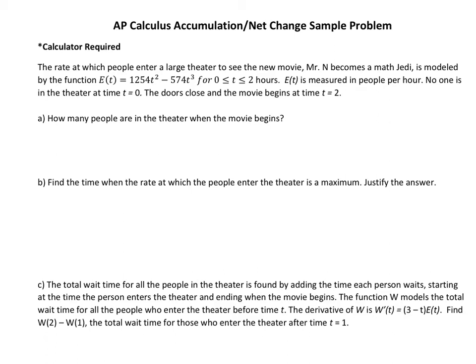Hey everybody, it's Mr. N here, and today we are going to do a practice problem for the AP test. This is an accumulation net change problem that resembles one that was on the AP test. The rate at which people enter a large theater to see the new movie, Mr. N Becomes a Math Jedi, is modeled by the function E(t) = 1254t² - 574t³ for t between 0 and 2 hours. E(t) is measured in people per hour. No one is in the theater at time t = 0, and the doors close so nobody else enters after time t = 2.